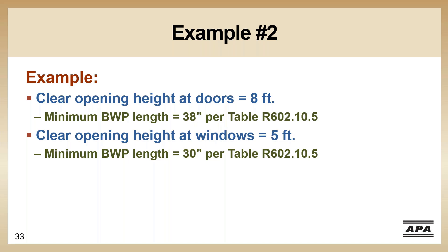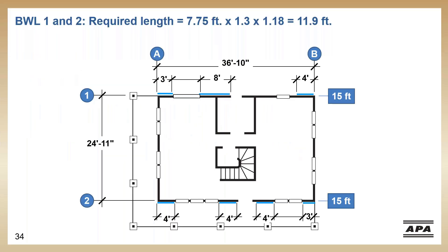Starting with our required length of 7.75 feet from the table and multiplying by adjustment factors of 1.3 and 1.18, we come up with a needed length of 11.9 feet for brace wall lines 1 and 2. Starting on the north wall, we pick up a 3-foot section next to the window, an 8-foot section, and a 4-foot section, totaling 15 feet of qualified bracing — greater than our 11.9. It also meets our placement requirements. At the south wall, we are also able to pick up 15 feet, meeting both length and placement requirements. So these two walls are in compliance.